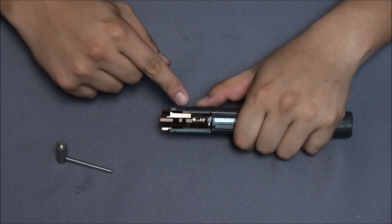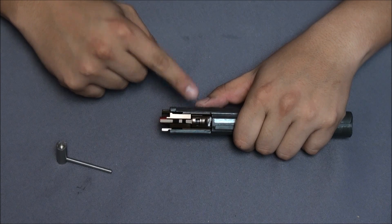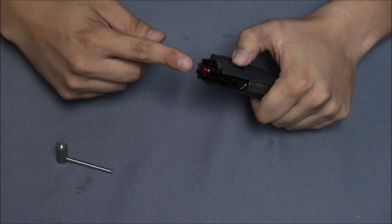You can see the disc valve has moved a little bit forward. Now we want to test the FPS with the red nozzle head.